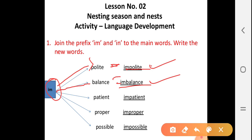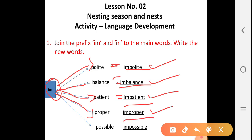Third one, 'patient'. After joining 'im' to 'patient', we get the answer: impatient. Fourth one is 'proper'. After joining 'im' to 'proper', we get the answer: improper.